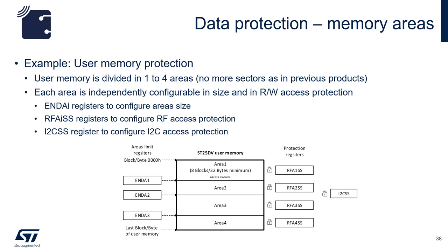There are three main registers. The ENDA register configures the sizes. The RF-A-ISS registers configure the RF access protection. And finally, the I2C-SS register configures I2C access protection.